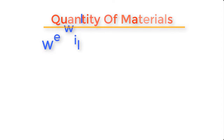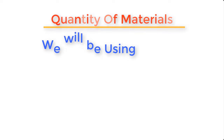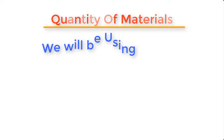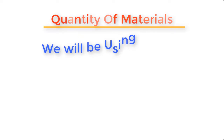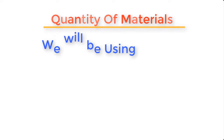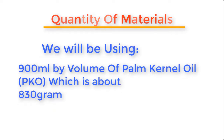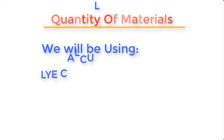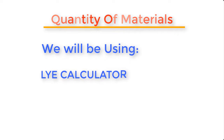The next thing we will do is determine the quantity of materials we are going to use. In this preparation we're going to be using 900 ml by volume of palm canal oil, which is about 830 grams by weight. We're going to use the lye calculator to determine the amount of caustic potash and the volume of water required to dissolve it.